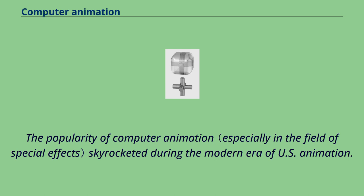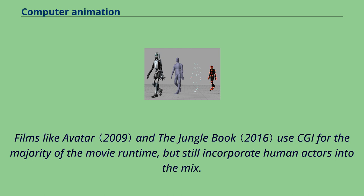The popularity of computer animations skyrocketed during the modern era of US animation. Films like Avatar and The Jungle Book use CGI for the majority of the movie runtime, but still incorporate human actors into the mix.